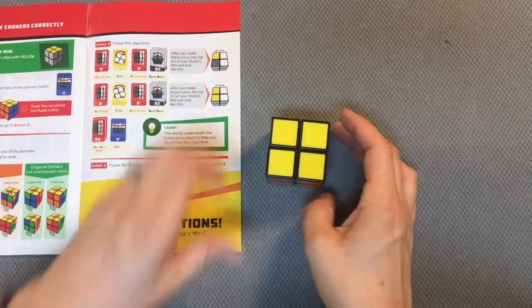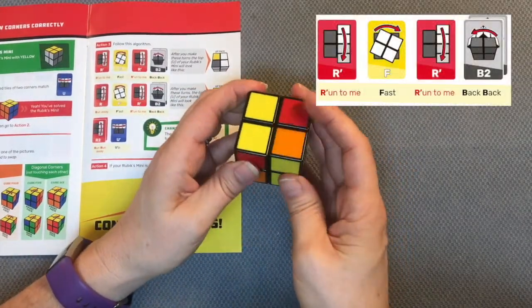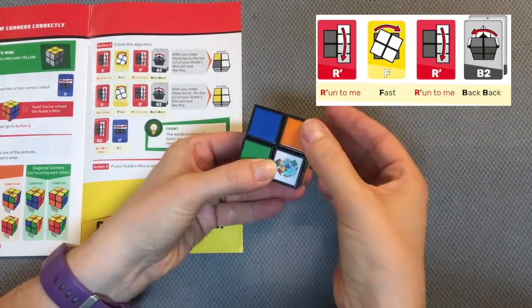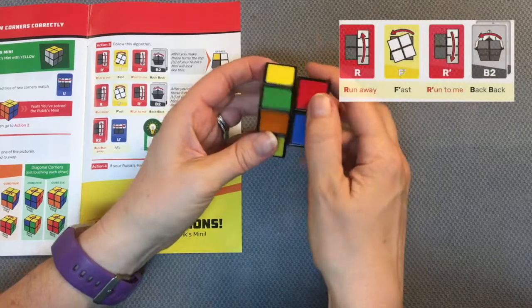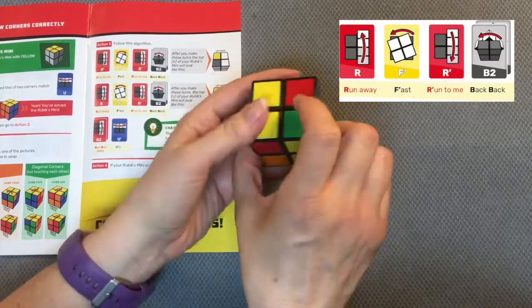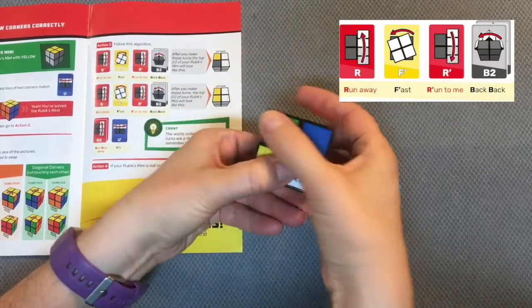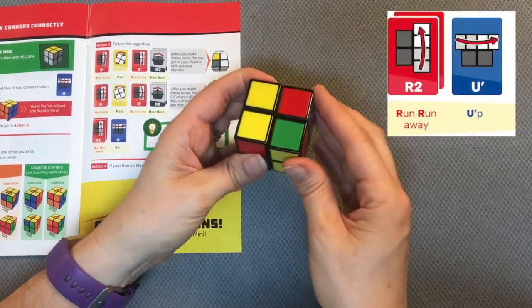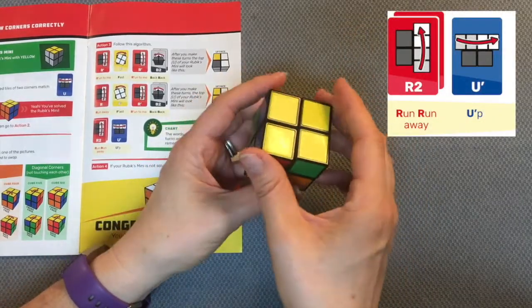Now I'm going to run this algorithm. Run to me, fast right. Run to me, back back. Run away, fast left. Run to me, back back. Run away. Up right.